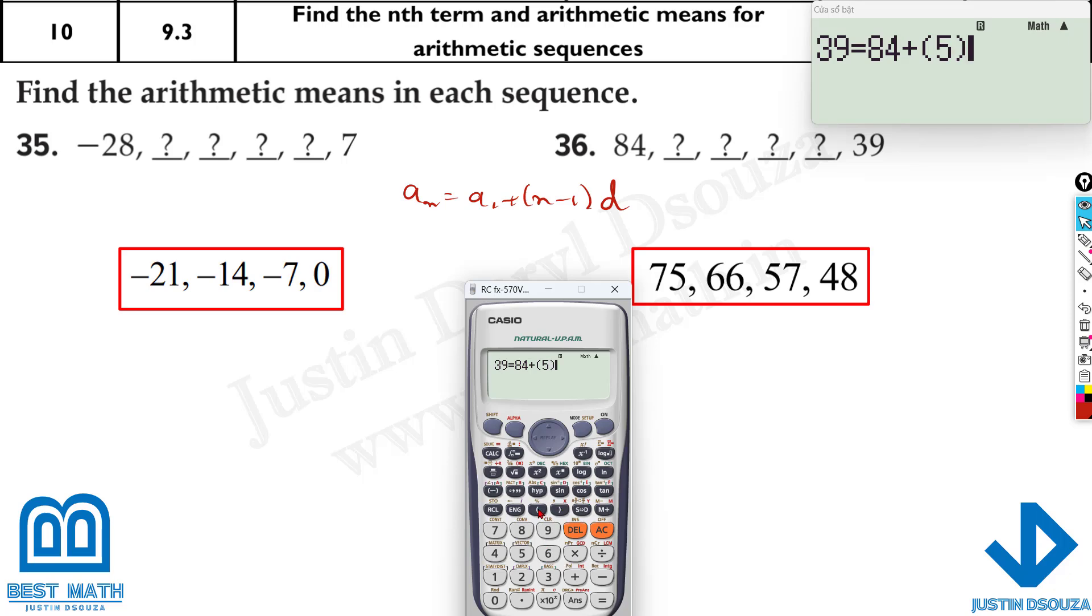It'll be 6 minus 1, that's 5 times x. Shift and solve and equal to. It's minus 9. So here we have 84 minus 9, that is 75. Now I'm just going to change this 84 to answer and leave the minus 9 there. It's 66, 57, 48.